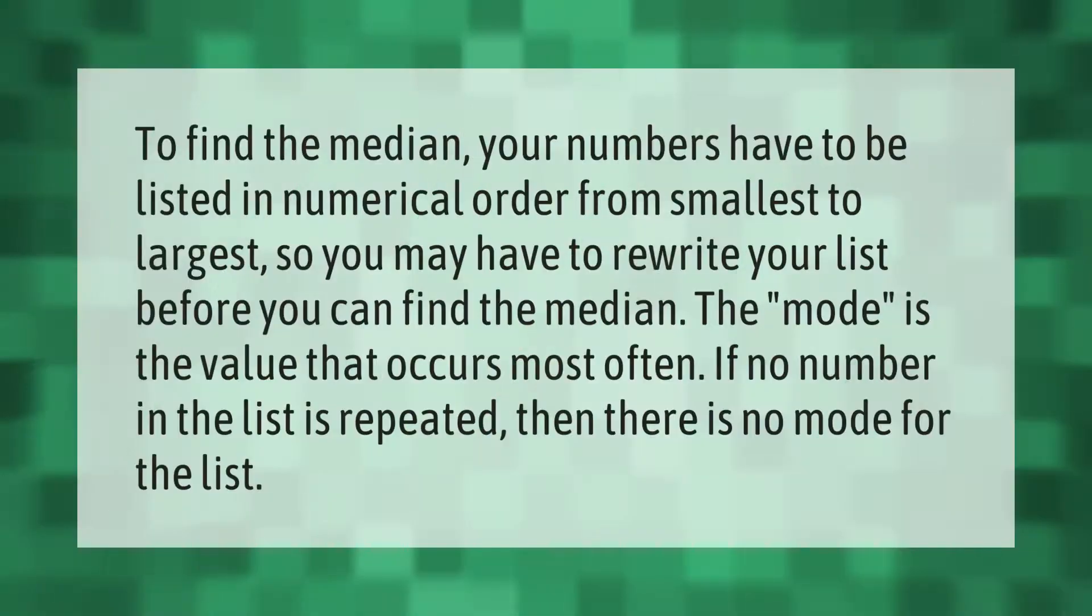To find the median, your numbers have to be listed in numerical order from smallest to largest, so you may have to rewrite your list before you can find the median. The mode is the value that occurs most often. If no number in the list is repeated, then there is no mode for the list.